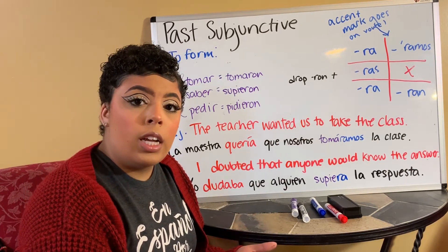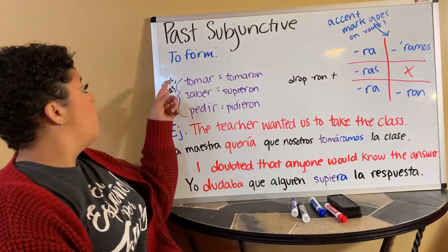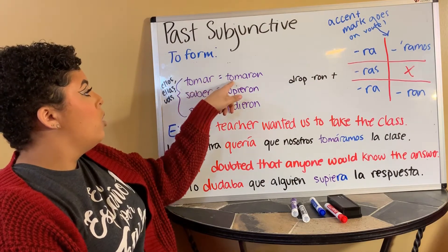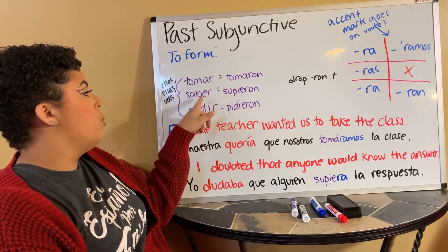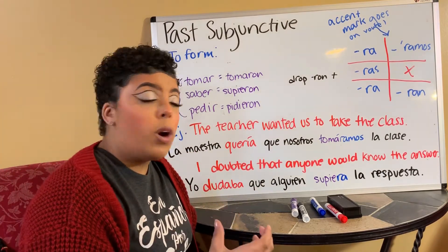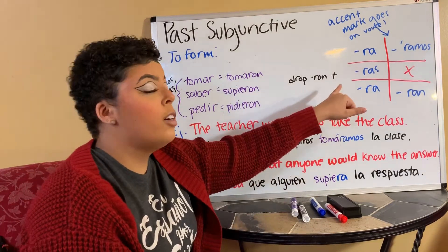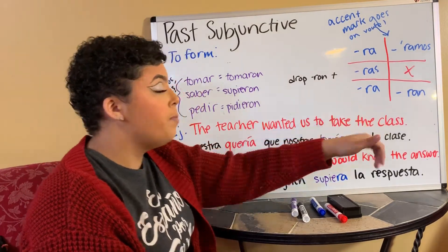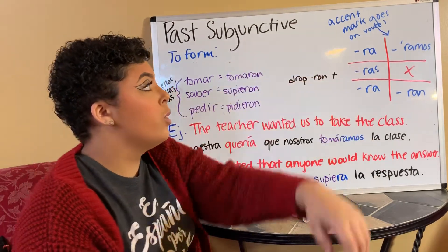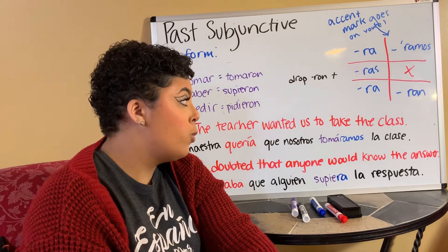So la manera en que forma este — you need your preterite tense ellos, ellas, ustedes form of your verb. So we have an -ar verb, -er verb, and an -ir verb here, for example. You are going to drop your -ron ending, this part here, and add on your imperfect subjunctive endings. Notice that there is an accent mark that goes over the vowel in the nosotros form.